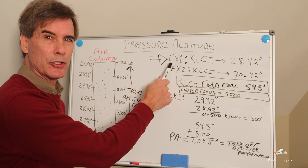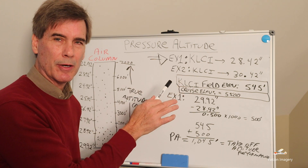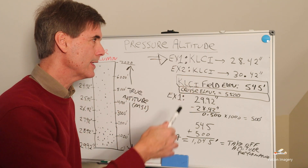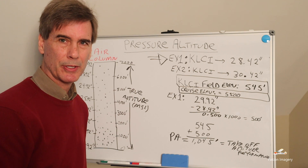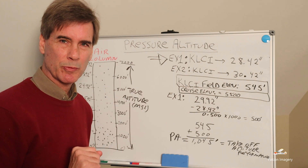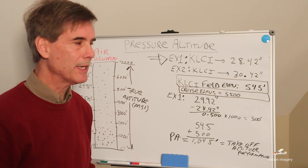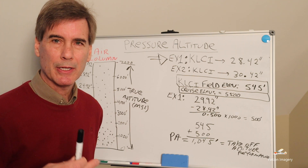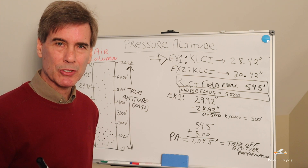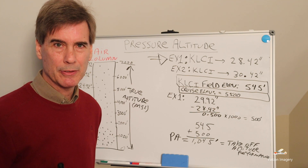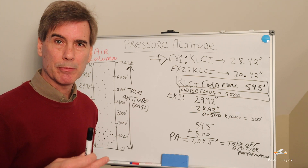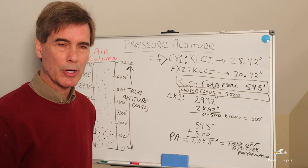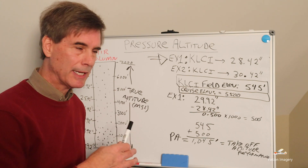The first example is departing out of Laconia Airport, KLCI. We listen to the AWOS and we hear it says 28.42 inches of mercury. We would dial that into the Kollsman window on the altimeter and we should read the field elevation of 545 feet. But we need to know what the pressure altitude is to see how the aircraft is going to perform. We also plan to cruise out of Laconia Airport at 5,500 feet — that's our cruise altitude.